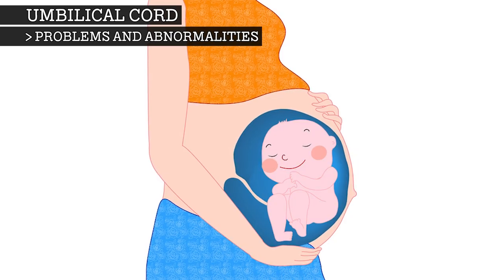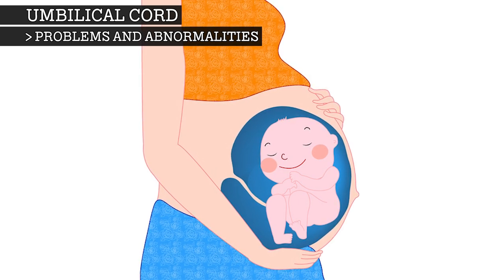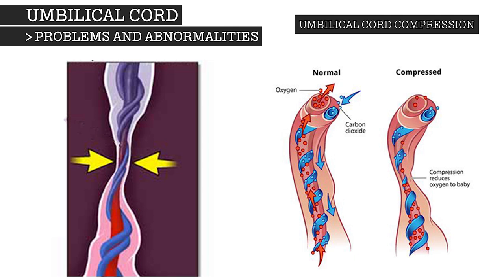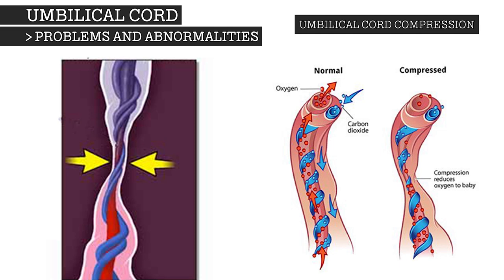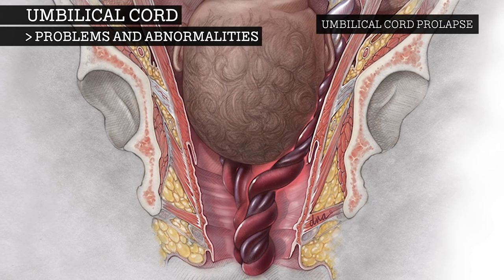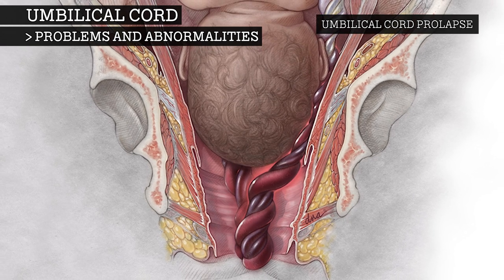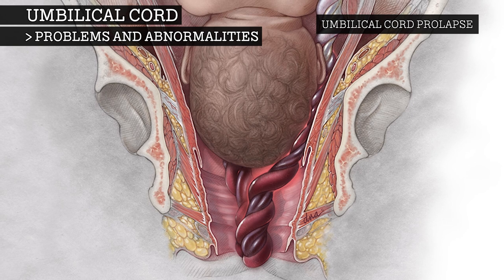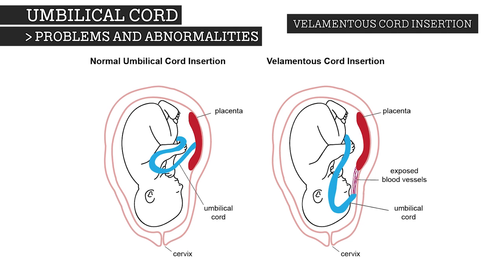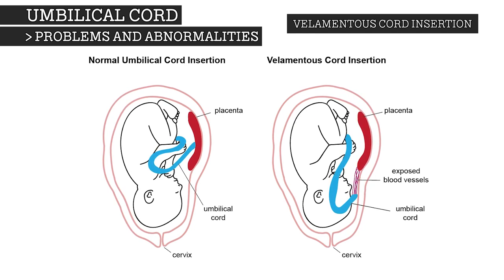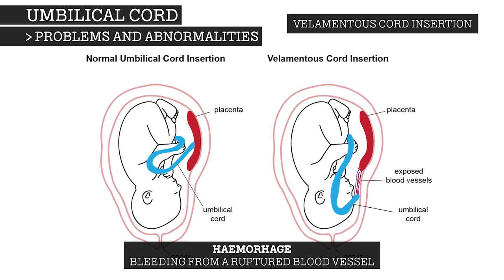A number of abnormalities can affect the umbilical cord, which can cause problems that affect both mother and child. These are: umbilical cord compression, when the cord becomes compressed so that the baby is not getting enough blood; umbilical cord prolapse, when the umbilical cord comes out of the uterus with or before the presenting part of the baby, possibly causing umbilical cord compression; and velamentous cord insertion, when fetal blood vessels are not encased within the protective umbilical cord and they insert into the fetal membranes, possibly leading to a hemorrhage or death of the fetus.